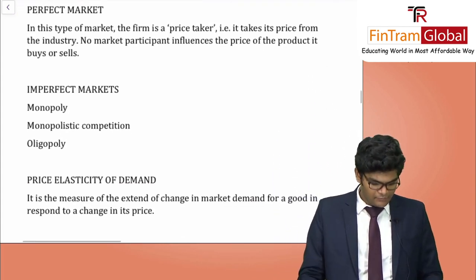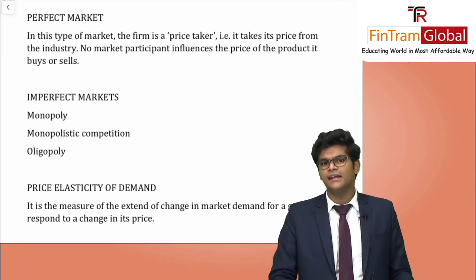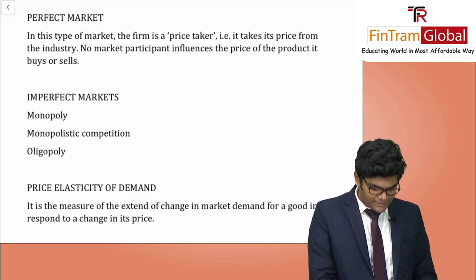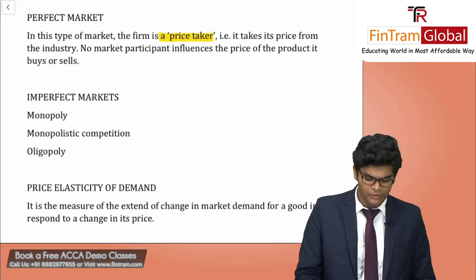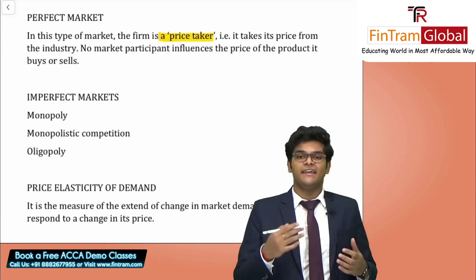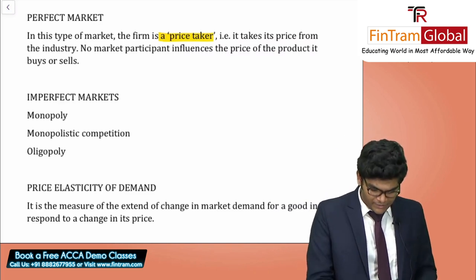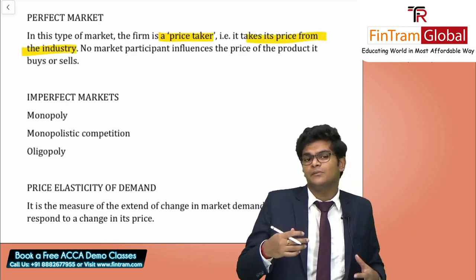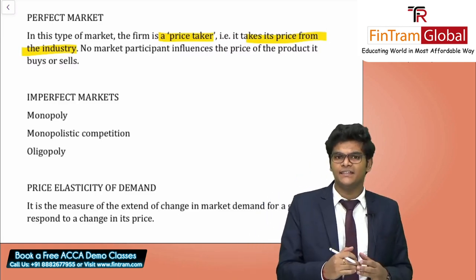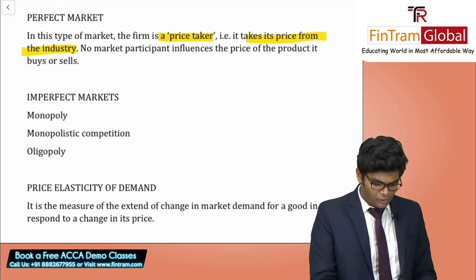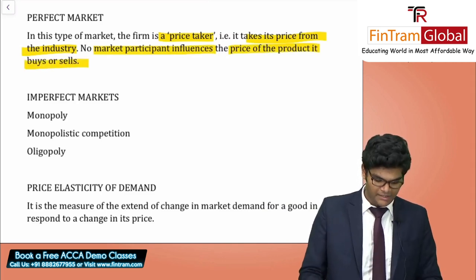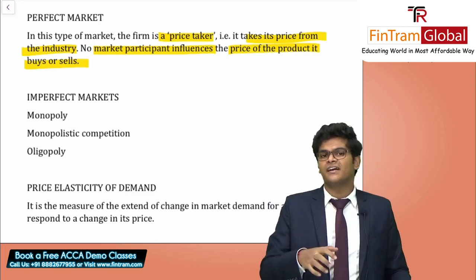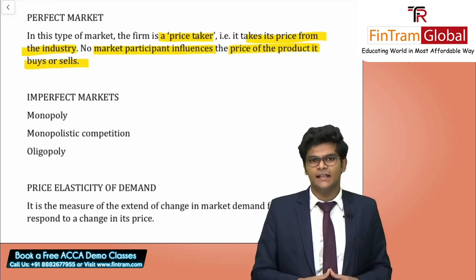There are two market structures. In a perfect market, firms are price takers — prices are determined by supply and demand, and no single participant can control prices. In an imperfect market, firms are price makers. Examples of imperfect markets include monopoly (single seller), monopolistic competition (many suppliers with similar but not identical products), and oligopoly (few sellers with mutual pricing agreements).